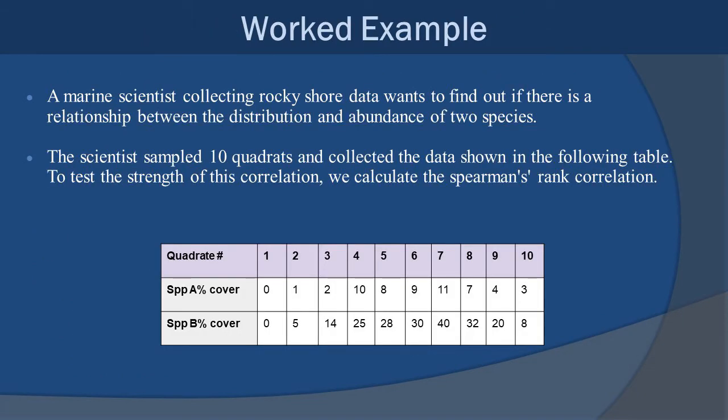All of this will make much more sense if we actually go through a worked example. So here we go. A marine scientist collecting rocky shore data wants to find out if there is a relationship between the distribution and abundance of two species, aptly named species A and species B. Very creative, right? The scientist sampled 10 quadrats and collected the data shown in the following table. To test the strength of this correlation, we will calculate that lovely Spearman's rank correlation. Very much like our Littorina and distance situation that we were talking about before, this is just a kind of generalized example. We have quadrat 1 through 10. We have variable 1, which would be species A percent coverage, and variable 2, which would be species B percent coverage. Now that's where we get into the sets of data. There's 10 sets of data, one per quadrat with two variables per quadrat.